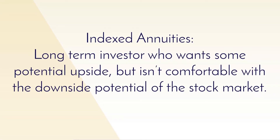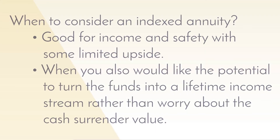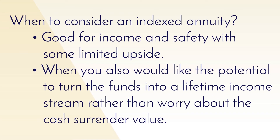Indexed annuities are for two types of people. They're for people that cannot handle downside risk — you do not want risk in the market, or maybe you already have enough market risk. So you're okay with a zero return, but you're not okay with negative returns. You want some upside opportunity, the ability to make more money. You don't want a plain fixed interest rate, but you don't want the downside either. An indexed annuity gives you some upside opportunity with no downside. It's for the long-term investor that doesn't want downside risk.